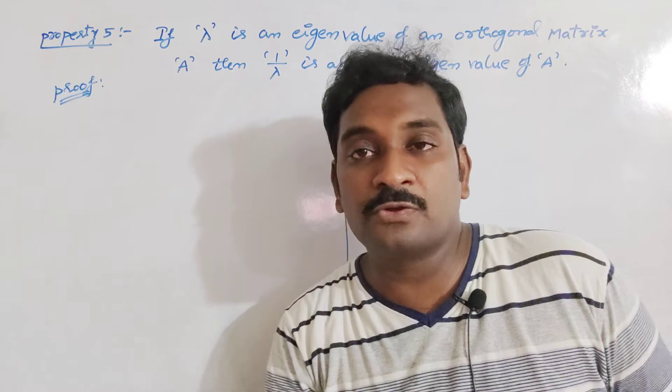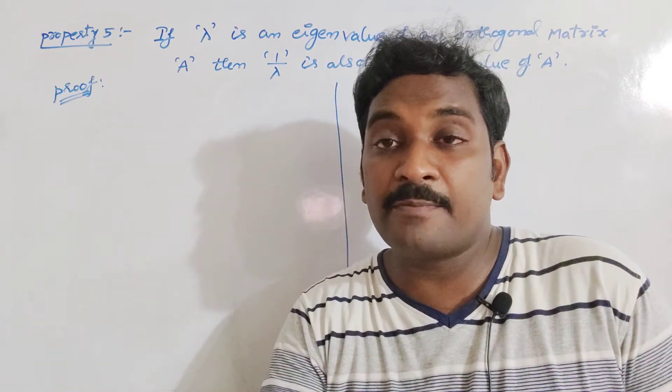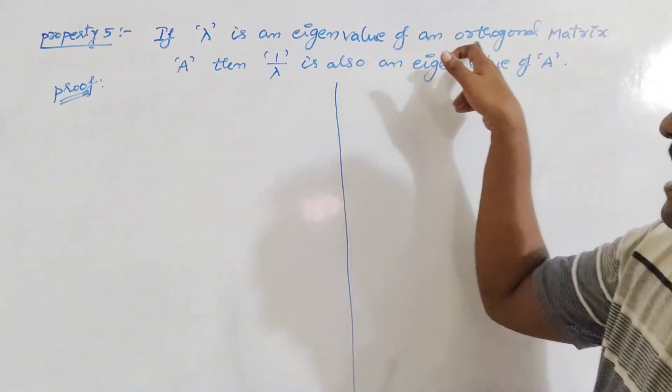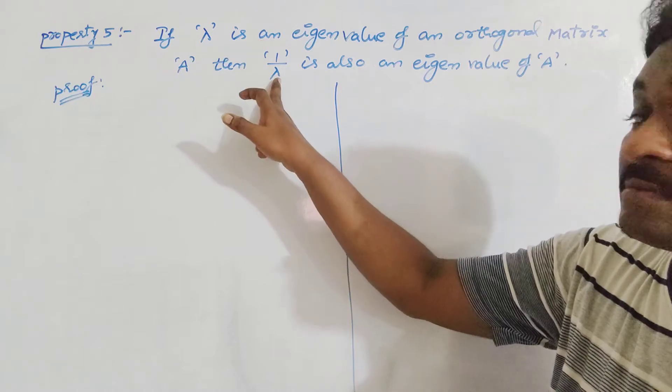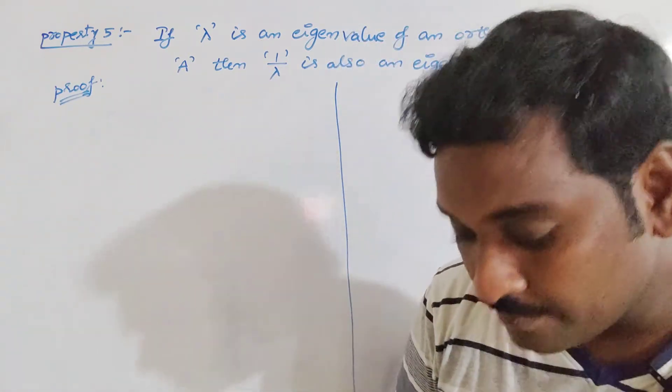Already from the previous properties, we know that if lambda is the eigenvalue of A, then 1 by lambda becomes eigenvalue for A inverse. If A is particularly orthogonal matrix, then 1 by lambda becomes the eigenvalue for A. That is the specialty of the orthogonal matrix.